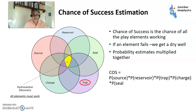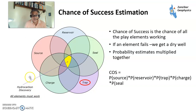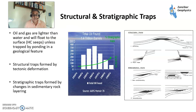In terms of chance of success, there are five main elements — different companies frame them slightly differently. You need a hydrocarbon source rock that generates hydrocarbons, and those hydrocarbons need to migrate. You need a reservoir to contain hydrocarbons, a seal to keep the trap intact, and then a trap itself. Today we're going to focus on traps, but all of these elements have to work for something to come together.